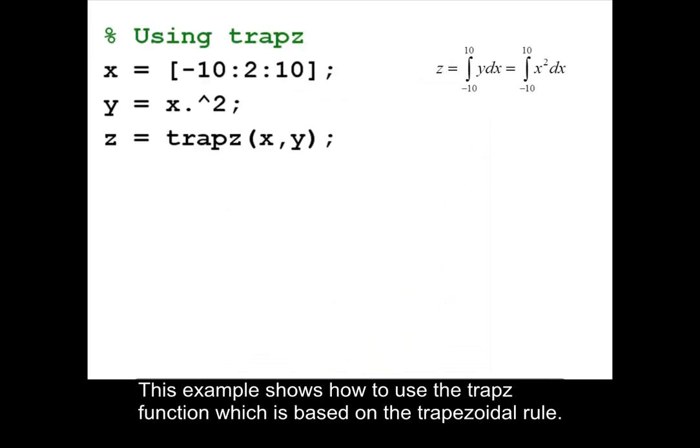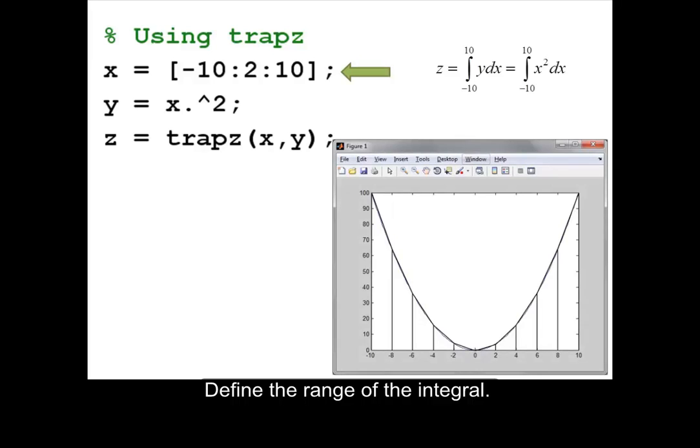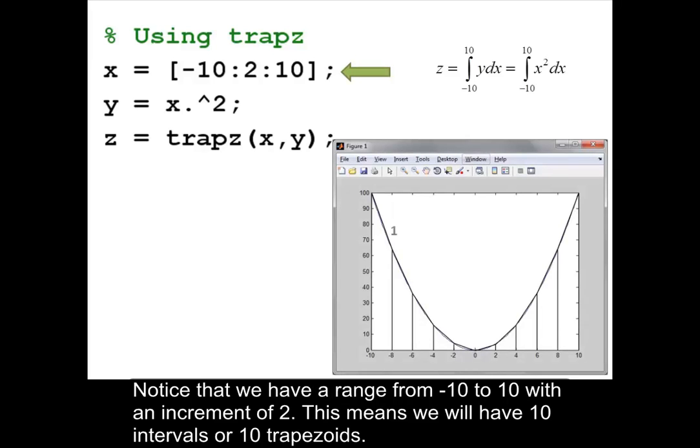This example shows how to use the trapz function which is based on the trapezoidal rule. Define the range of the interval. Notice that we have a range from negative 10 to 10 with an increment of 2. This means we will have 10 intervals or 10 trapezoids.